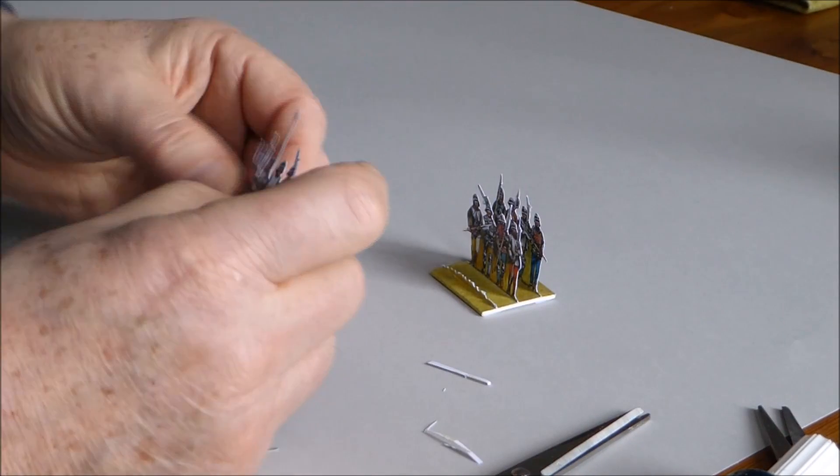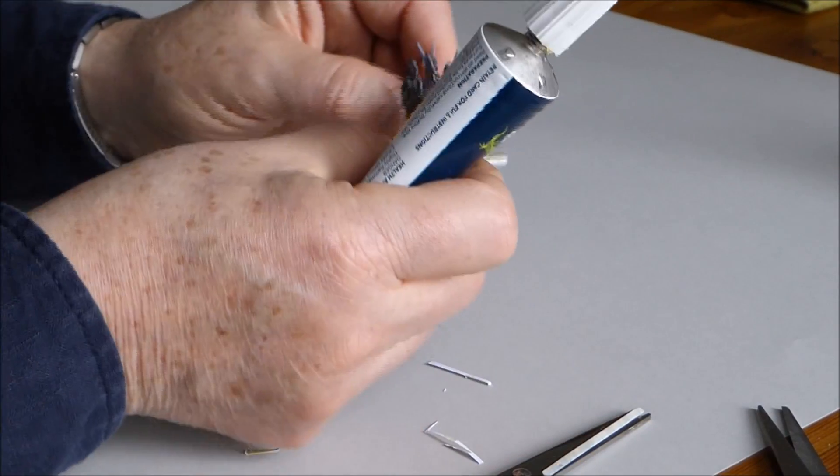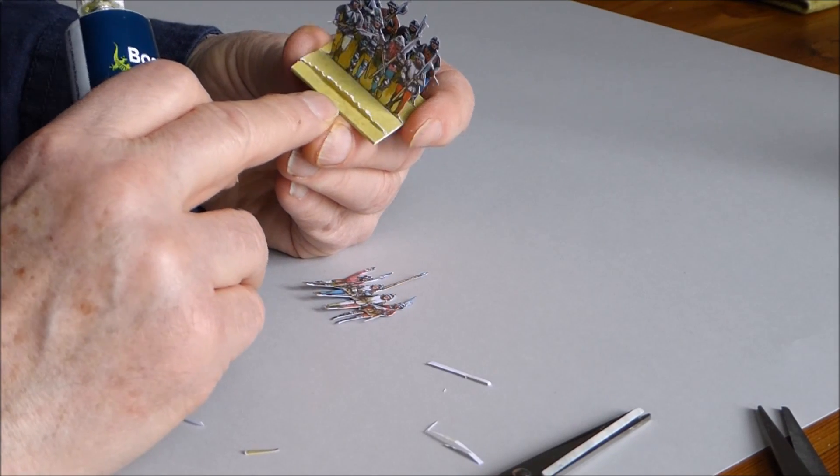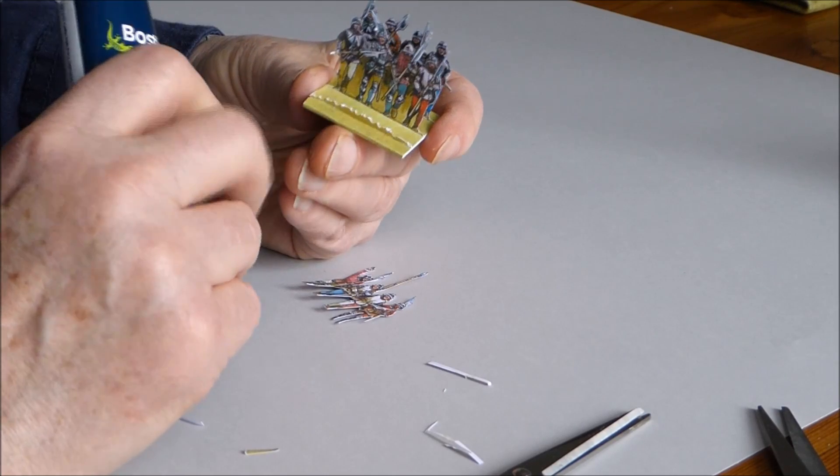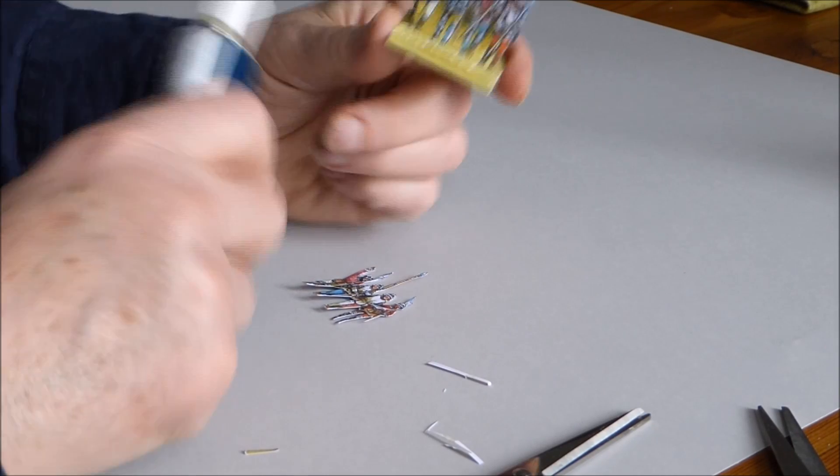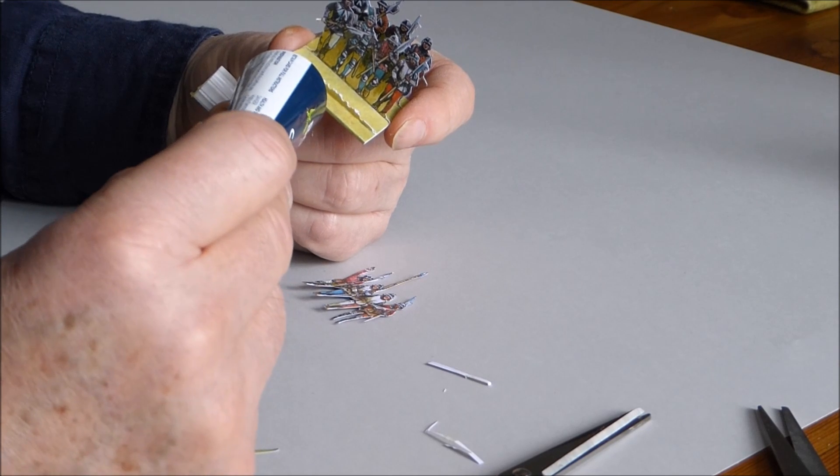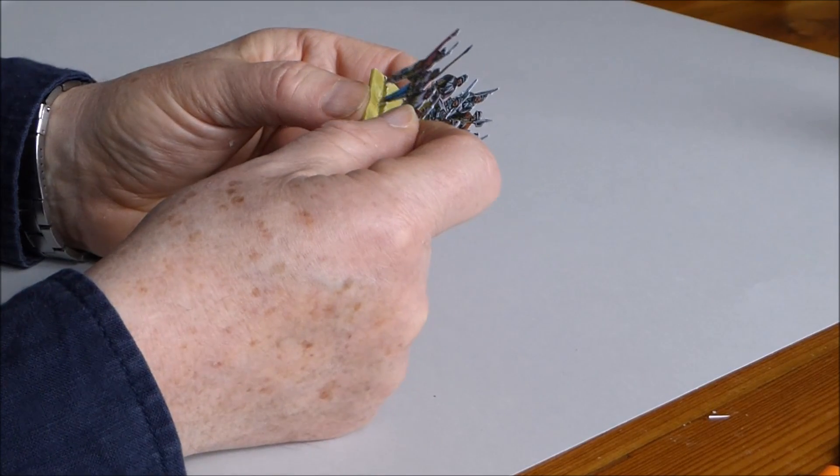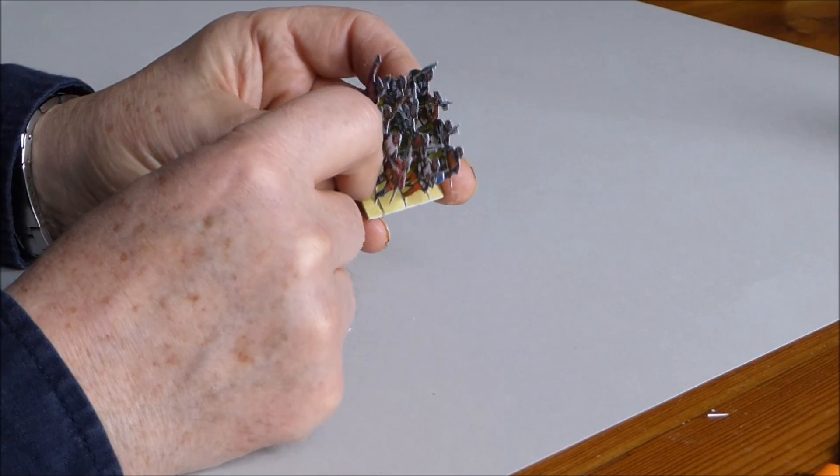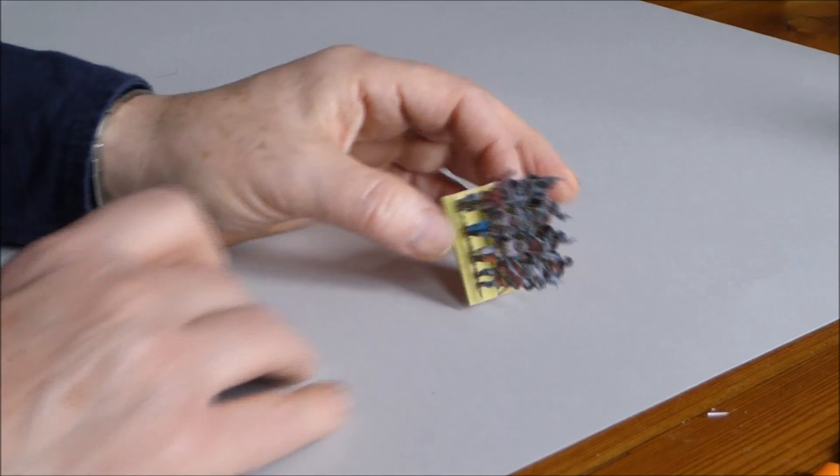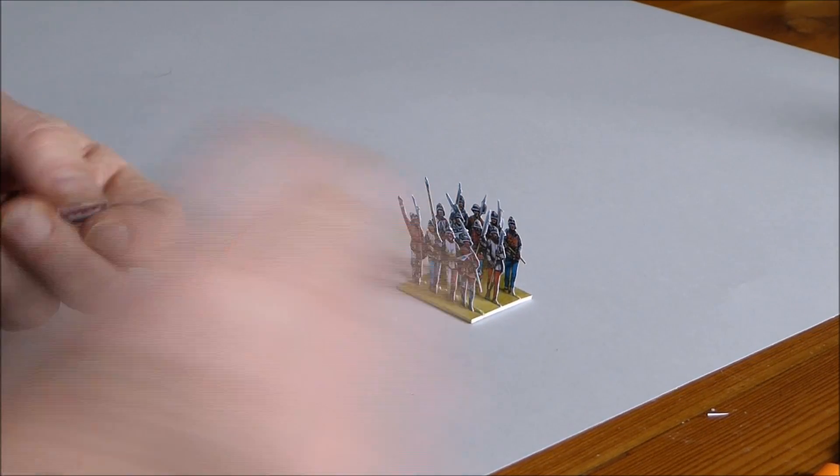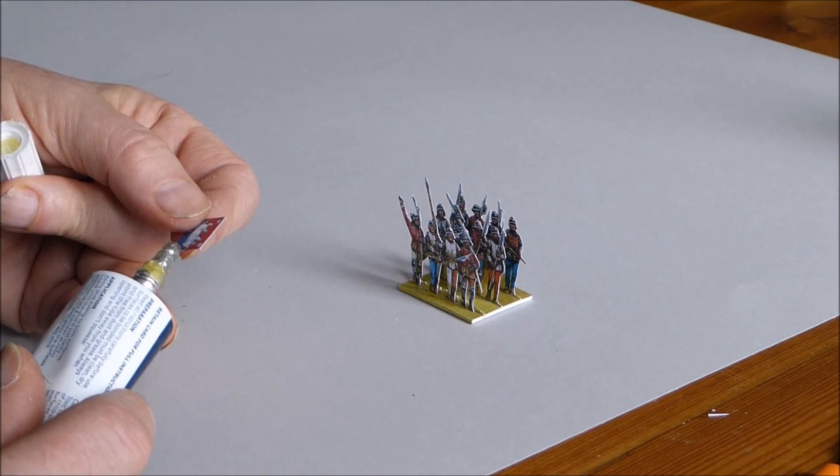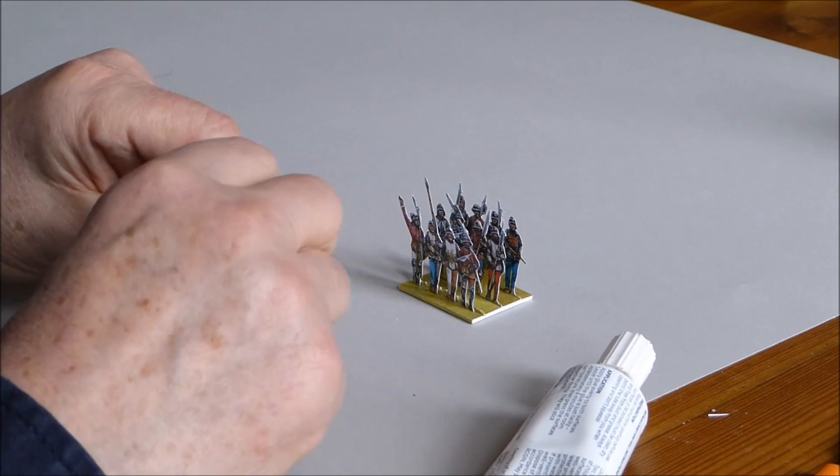I'm now going to stick the front rank onto the locator strip. This locator strip has been attacked with a crazy pair of pinking shears that I bought to give it a nice grassy effect. It hadn't occurred to me but Andy Callan who was making some of these decided he wanted it grassy. And then I remembered my pinking shears. Press those onto there. And the impact adhesive grabs straight away. Now this is what we call a command stand since it's officers and standard bearers. So I'm just going to put a little glue on this standard.